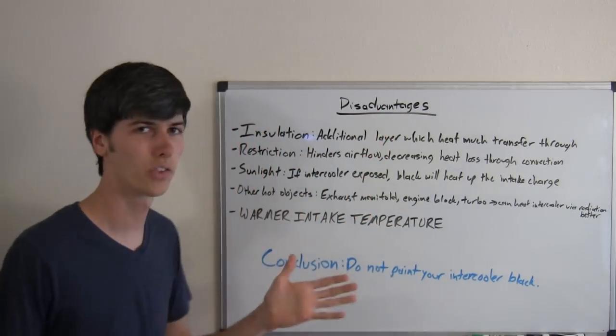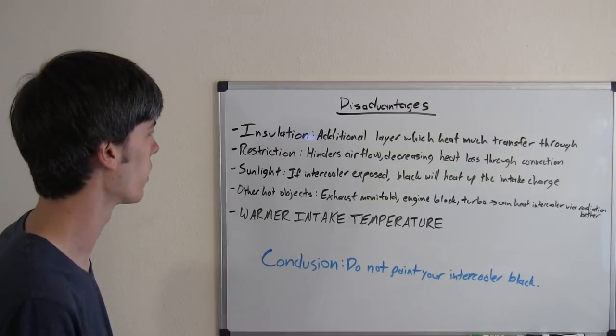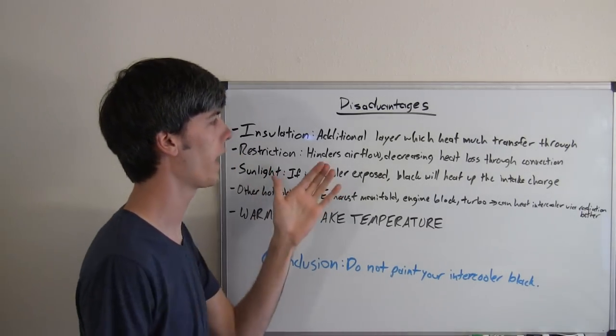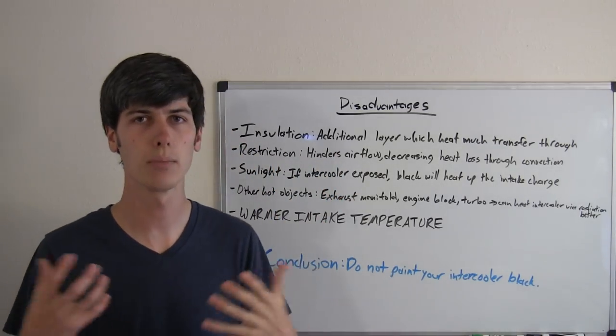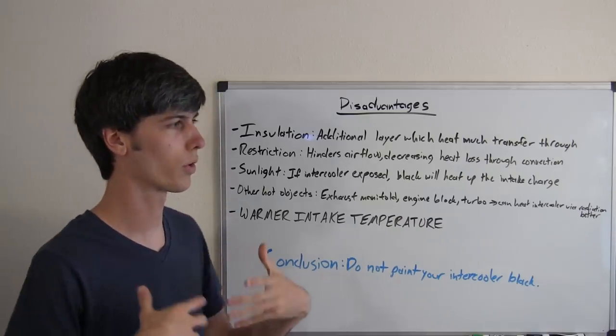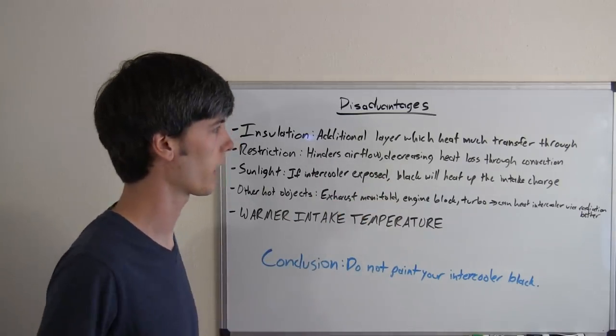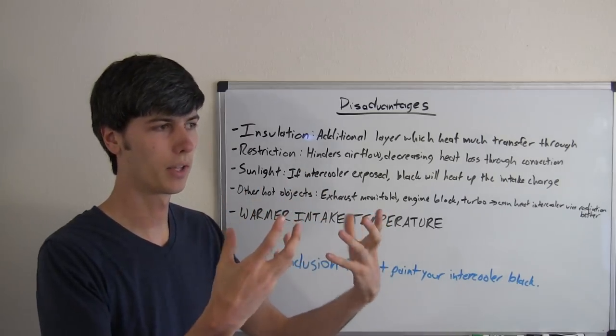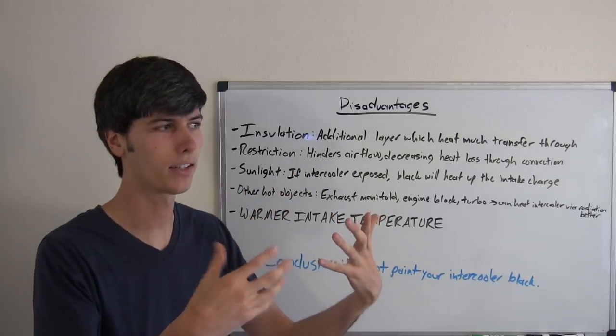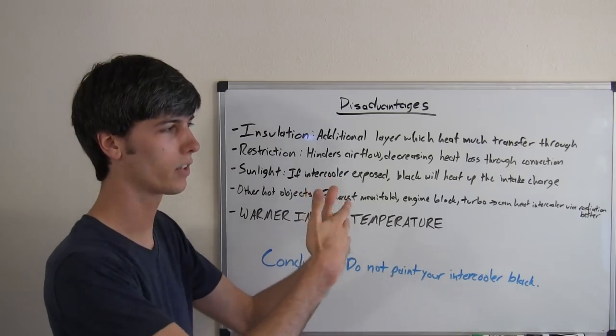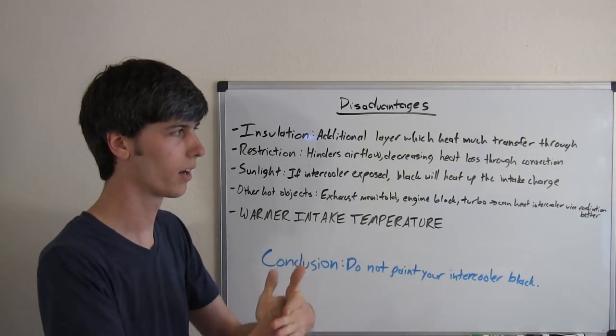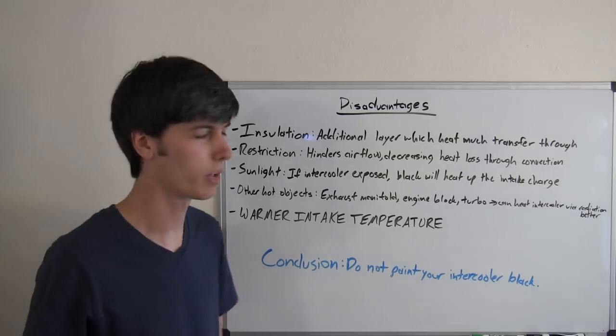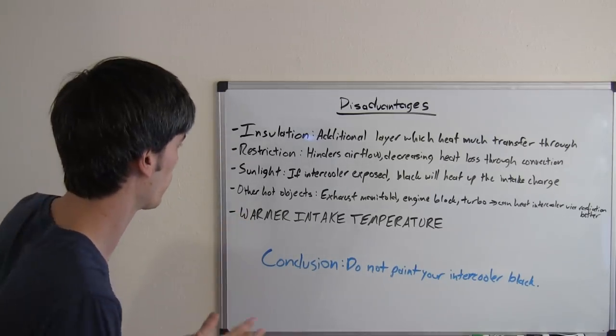So, let's talk about the disadvantages of painting your intercooler black. First of all, insulation. You are adding an additional layer which the heat must transfer through in order to be transferred to the atmospheric air. So, you've got air going into the intercooler. It heats up the aluminum. The aluminum then has to heat up the paint, and then the air has to cool the paint, which then cools the aluminum, which then cools the air. You can eliminate that step by not having paint on it, so you can have better heat transfer.